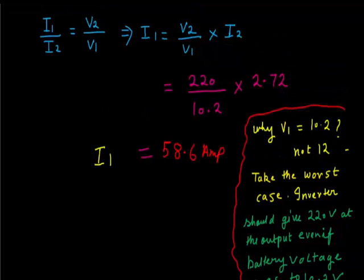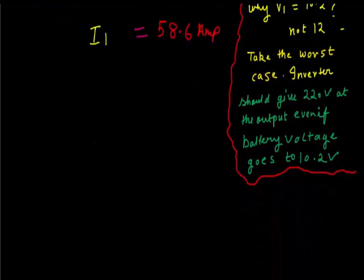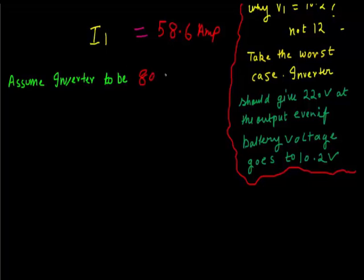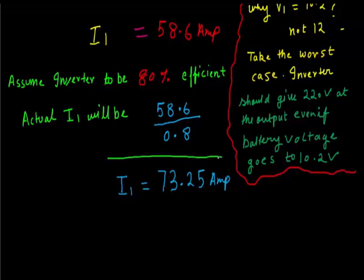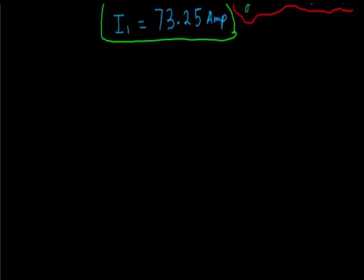I1 comes out to be 58.6 ampere. So assume that inverter is to be 80% efficient due to the heat loss because of the internal resistance used in the circuit of the inverter. The actual I1 will be the current that will flow at full load is 73.25 ampere from the battery to the inverter.